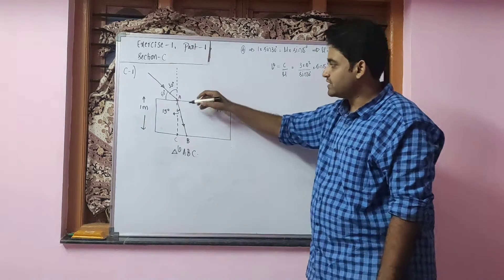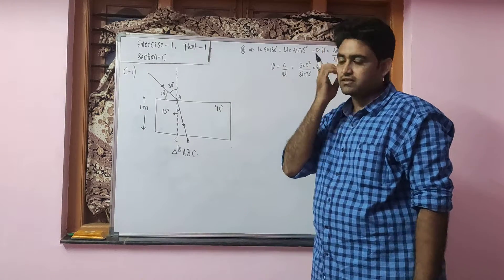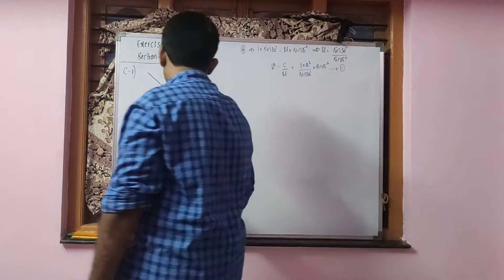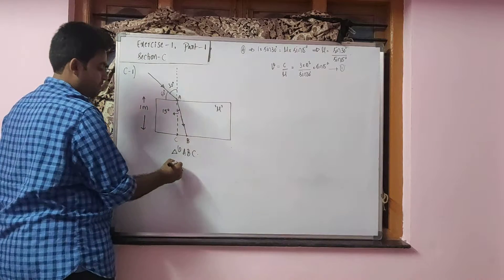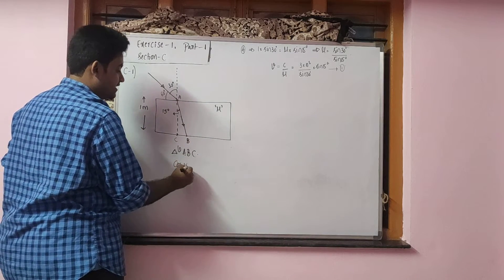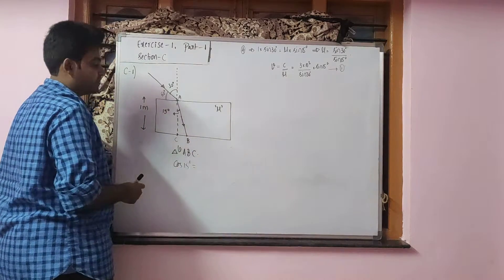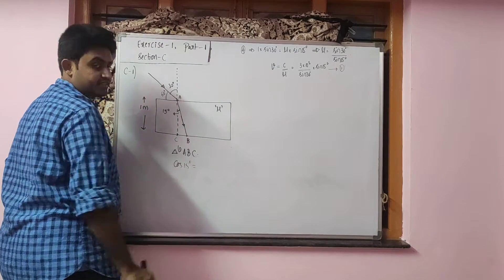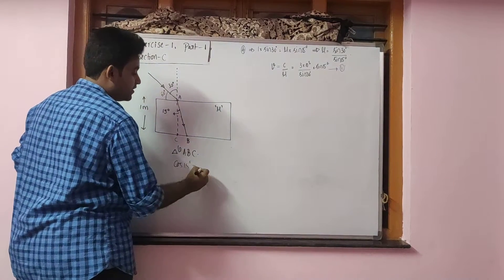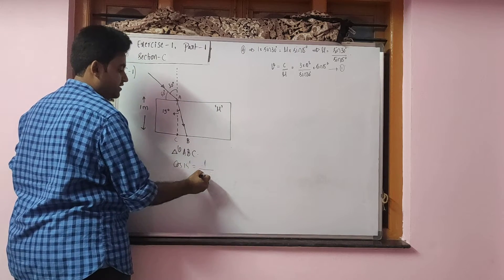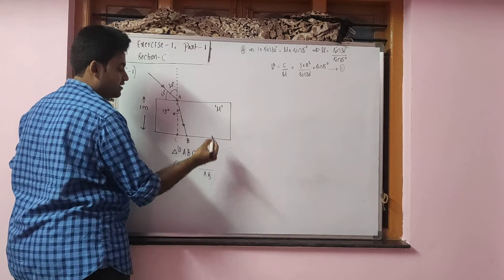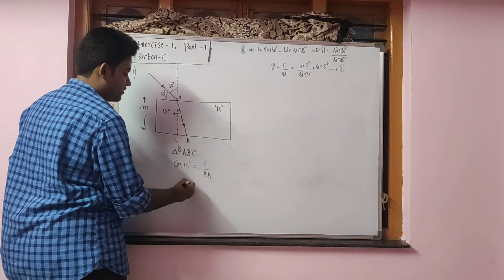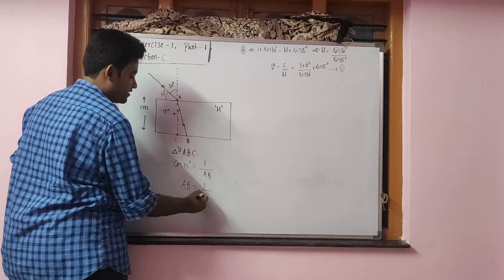And to find out the distance travelled by the light inside this glass tube I will use this right angle triangle ABC. So inside the triangle ABC I can take cos 15. Cos is adjacent by hypotenuse. Here adjacent side is AC and hypotenuse side is AB. So AC is known to us which is given as 1 meter divided by AB is the path travelled by the light inside it. So from here you will be getting AB equals to 1 by cos 15.